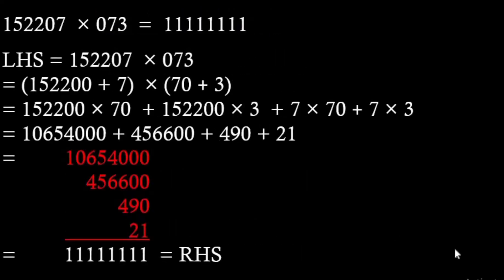The first row means 152207 × 73, which equals 11111111 — that means eight ones. Starting with the left-hand side, which is 152207 × 73, we want to apply the distributive property.